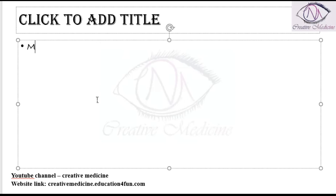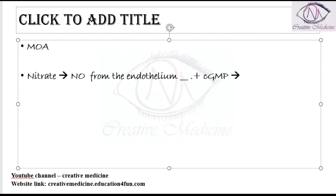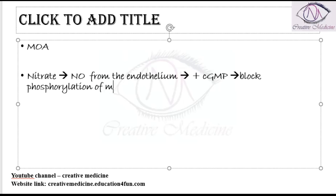The mechanism of action of nitrates: nitrates will mainly liberate nitric oxide from the endothelium. This nitric oxide will stimulate cyclic GMP, and this stimulation of cyclic GMP will block the phosphorylation of myosin light chain kinase.